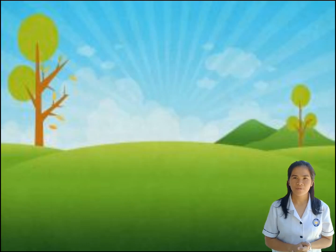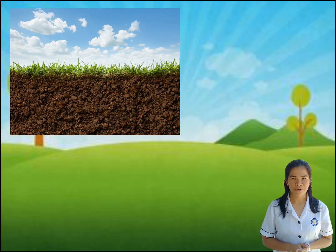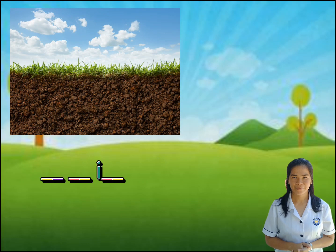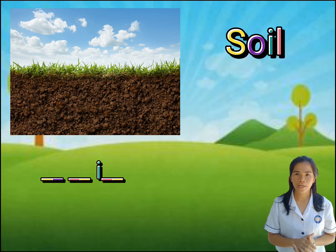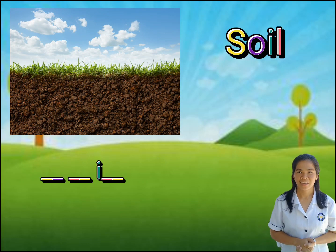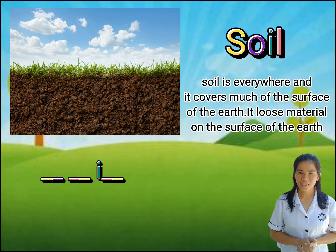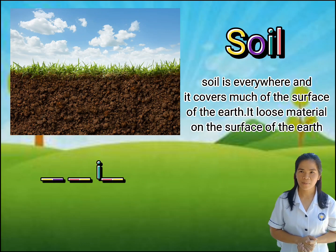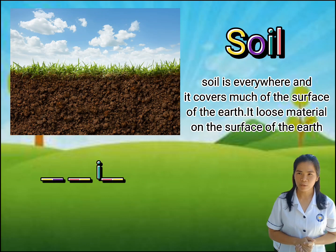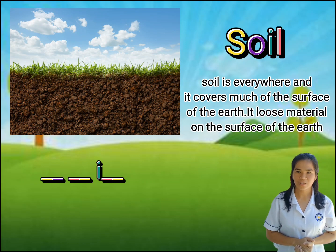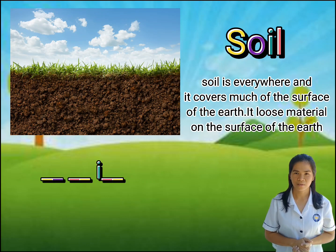Take a look at the first picture. Soil! You got it right! Soil is everywhere and it covers much of the surface of the earth. It is the loose material on the surface of the earth.